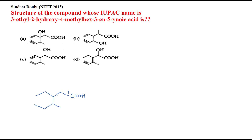Now I'll mark the carbons over these positions: this is two, this is three. I'll select the longest chain — so four, five, and six. Now let's see the substituents. The first one is 3-ethyl, and I know that in an ethyl group we have two carbon atoms, so one and two — this must be the ethyl group.